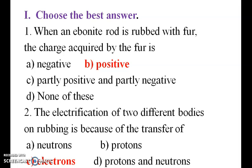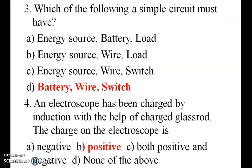The electrification of two different bodies on rubbing is because of the transfer of electrons. Which of the following must a simple circuit have? The answer is battery, wire, and switch.